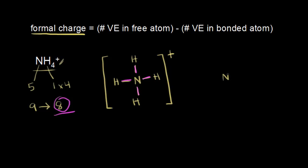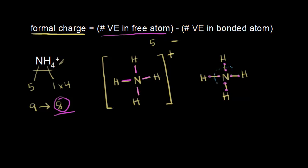That's the dot structure for the ammonium cation. Let's assign formal charges to the nitrogen and hydrogen. I'll redraw the dot structure and draw in the electrons — we know that each covalent bond consists of two electrons. To find the formal charge for the central nitrogen, we think about the number of valence electrons in the free atom. Nitrogen is in group five, so there are five valence electrons in the free atom. From that, we subtract the valence electrons assigned to the bonded atom. Looking at the dot structure, for each covalent bond, one electron is assigned to hydrogen and one to nitrogen.